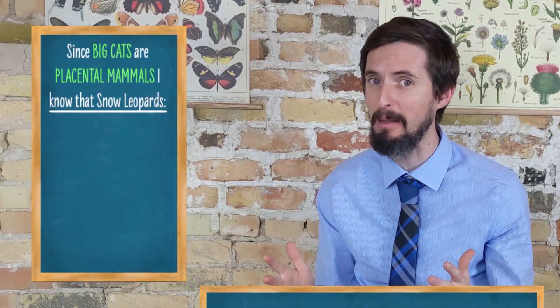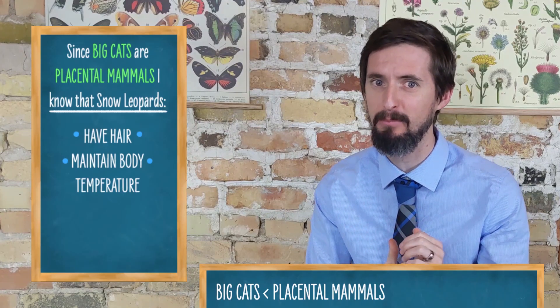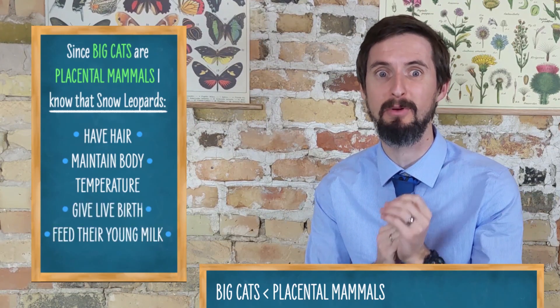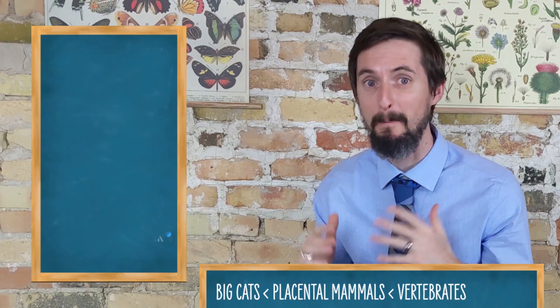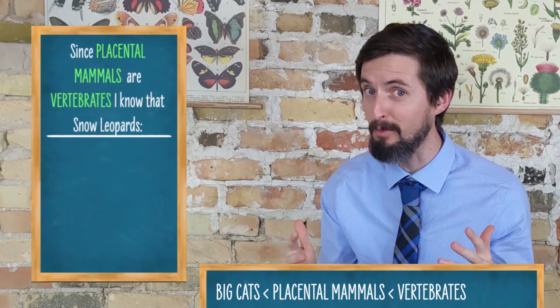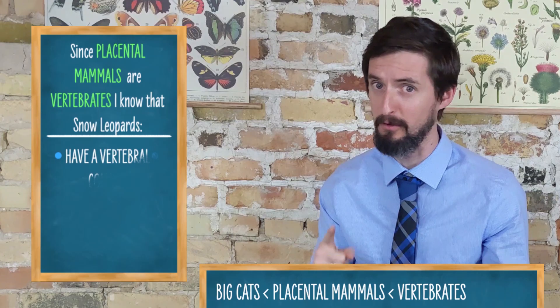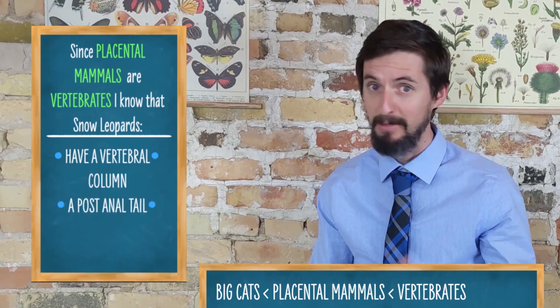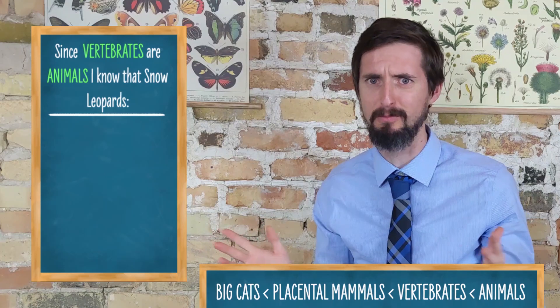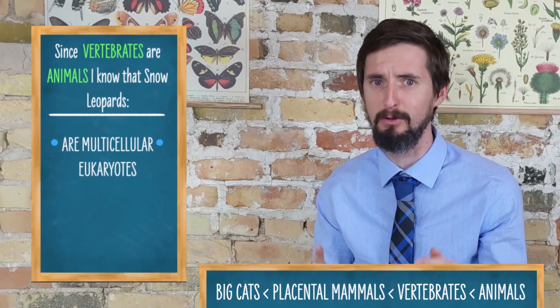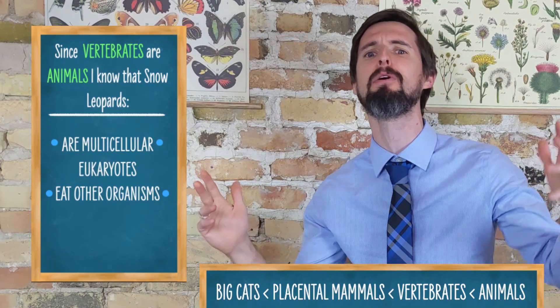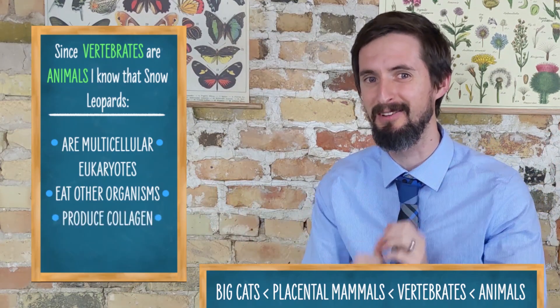Like, since these big cats fall into a bigger monophyletic group called the placental mammals, I suddenly know that snow leopards probably have hair, maintain a constant body temperature, give live birth, and feed their offspring with milk. Because I know that mammals fall into a bigger monophyletic group called vertebrates, I would know that snow leopards likely have a vertebral column and a post-anal tail. Because I know that vertebrates fall into a bigger monophyletic group called animals, I would know that snow leopards likely are multicellular eukaryotes that get their energy from eating other organisms and that produce collagen. And so it goes.